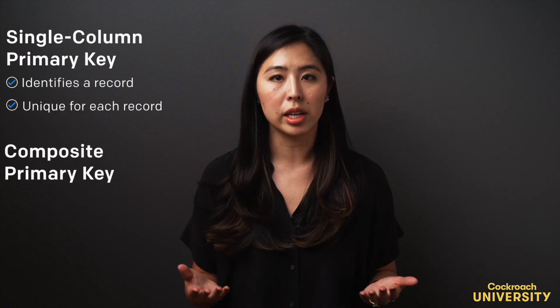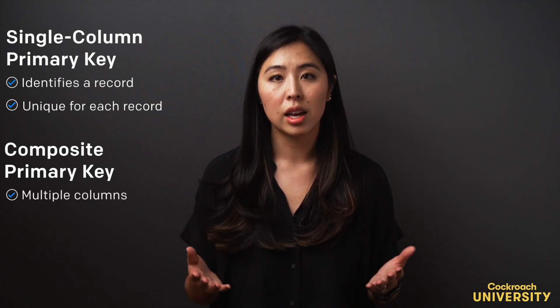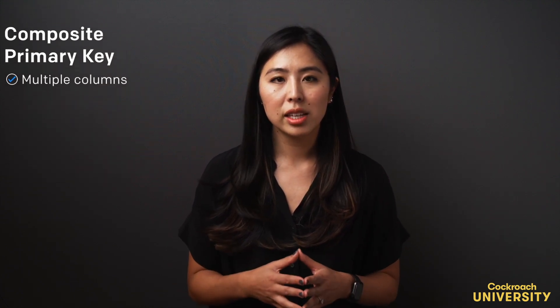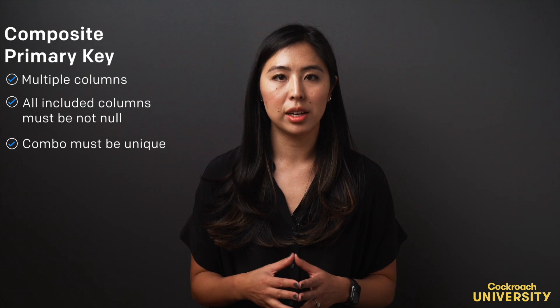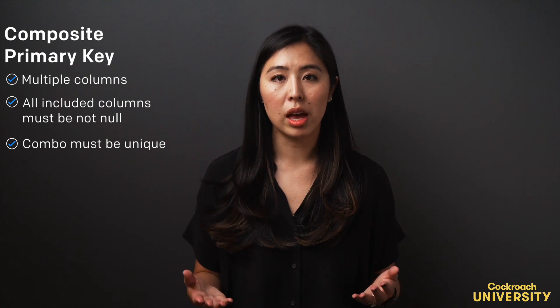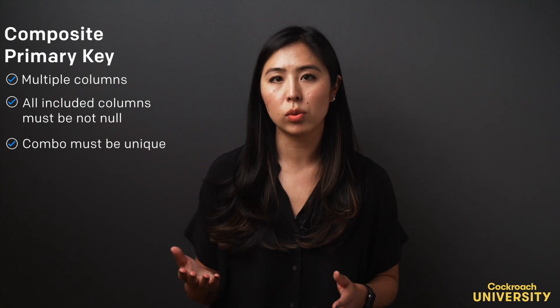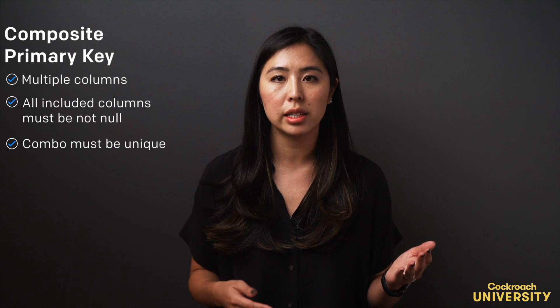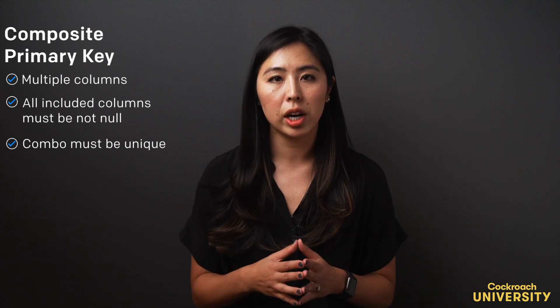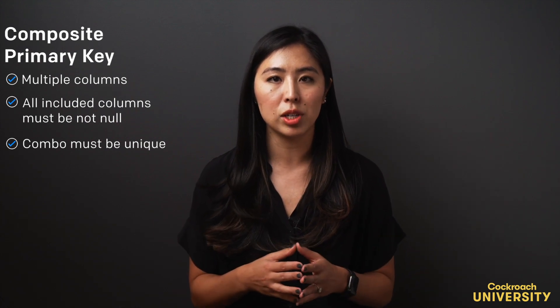Up until now, the primary keys I've talked about have all been comprised of a single column. There are also multi-column primary keys, which are called composite keys. In a composite key, the combination of all the included columns must be unique. For example, if I created a table called students with a composite key that combines sys ID and student ID, each pairing of IDs must be unique.